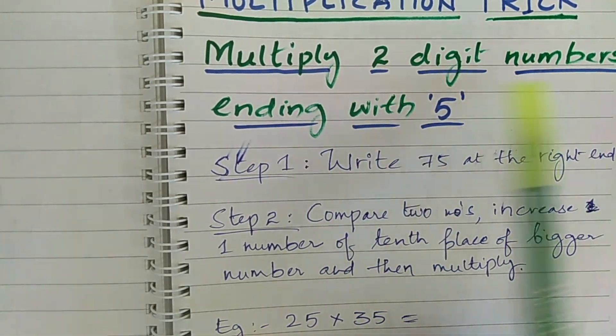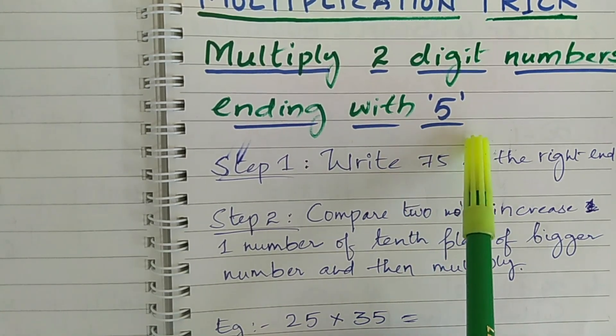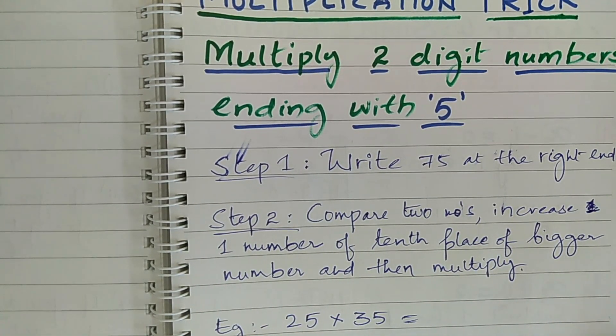Let's see. Multiply 2 digit number ending with 5. This can be done only in 2 steps.